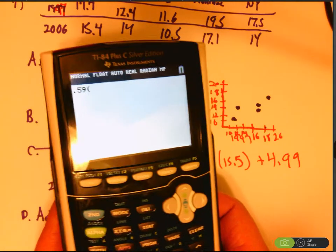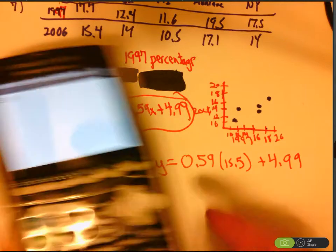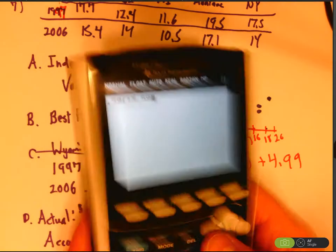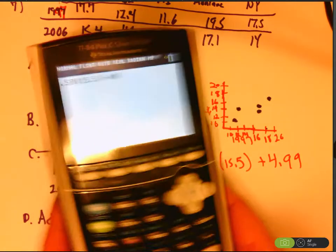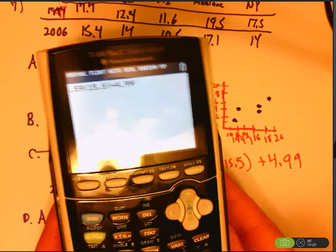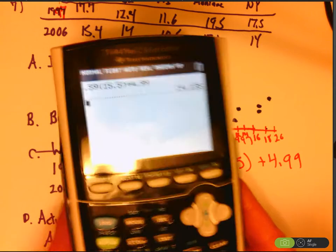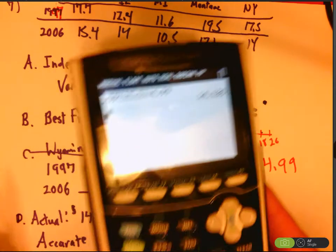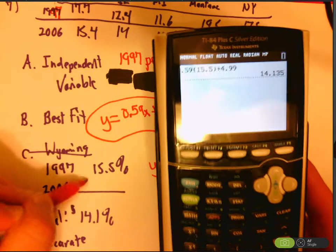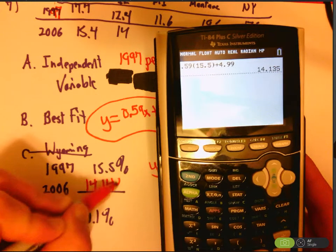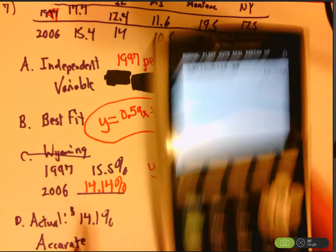So I just plug it in 0.59 because it's 0.59, 15.5, close that, plus 4.99, hit enter. And I get a value of about 14.13, something like that, so 14.14. That's my predicted percentage.